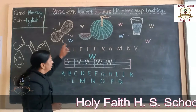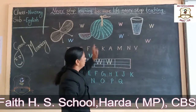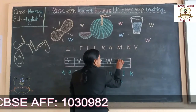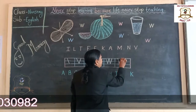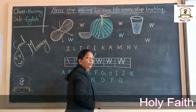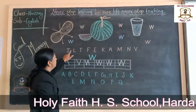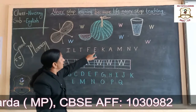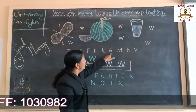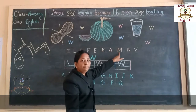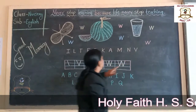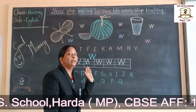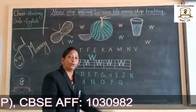W for Wool. W for Watermelon. W for Water. Now say: I, L, T, F, E, K, A, M, N, V, W. Okay students, as you can see, we have learned letter W in our written part.